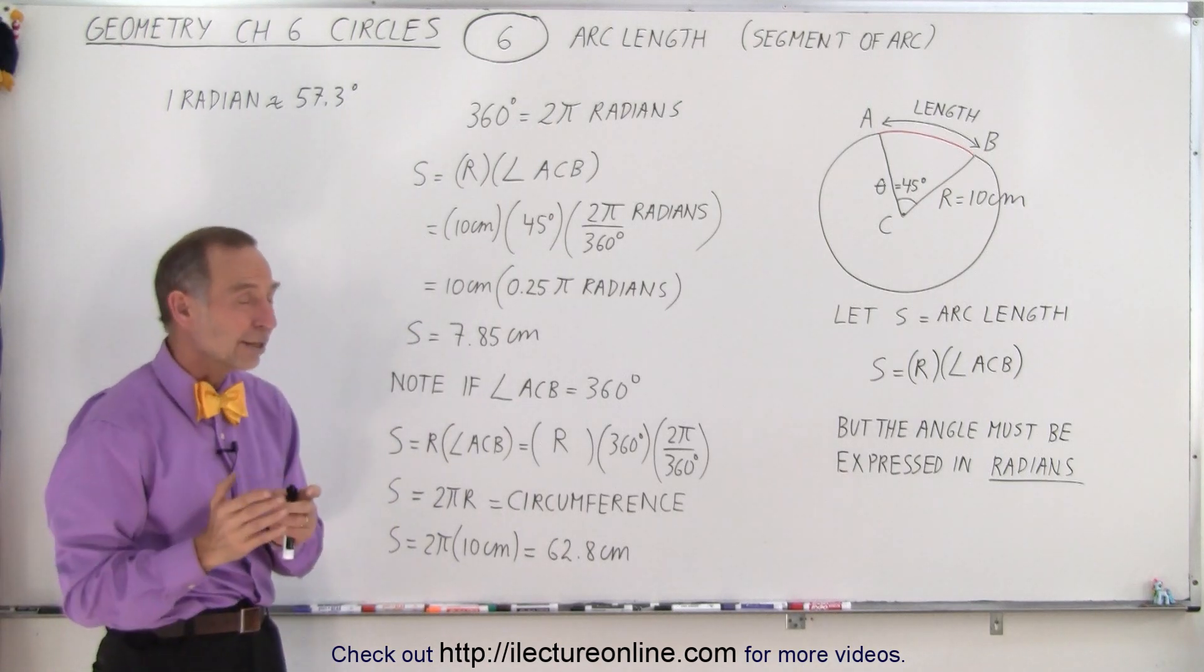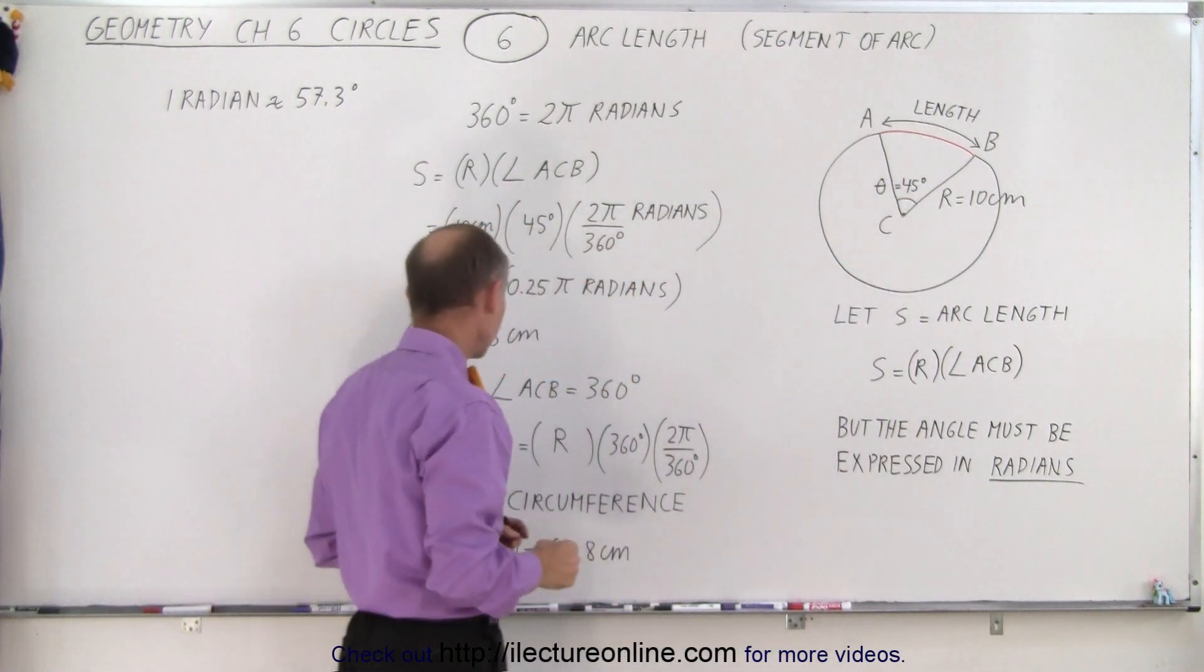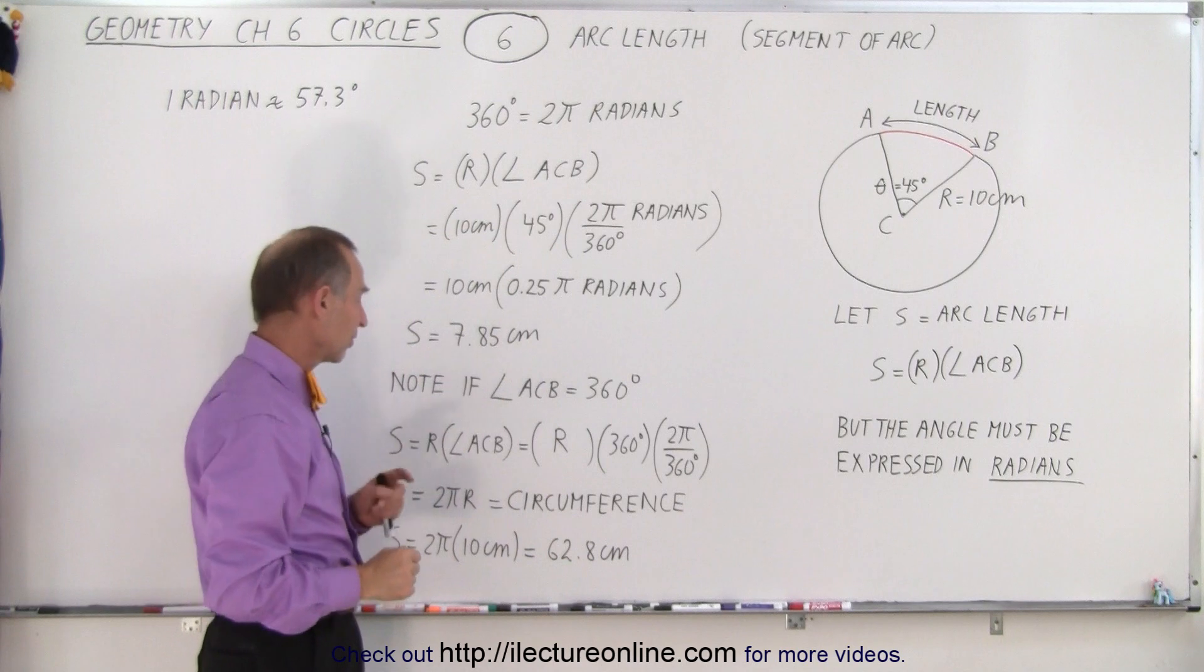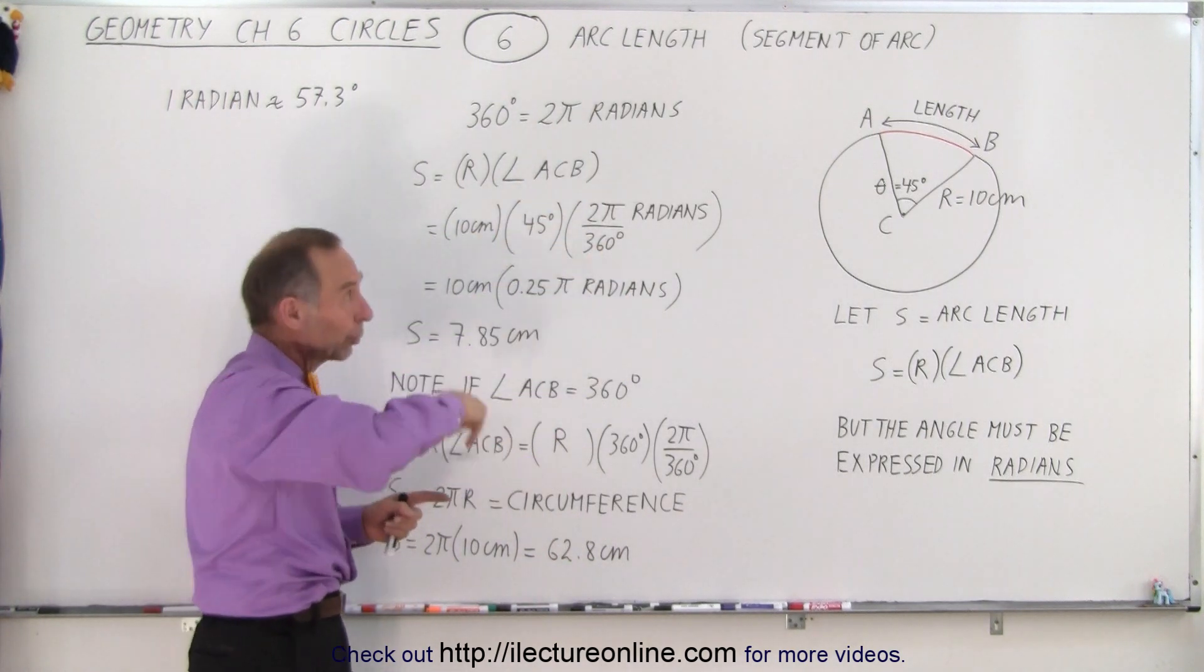Now, what if the angle was completely around all the way to 360 degrees? Well, if the angle was 360 degrees, then the arc length would be the distance all the way around the circle.